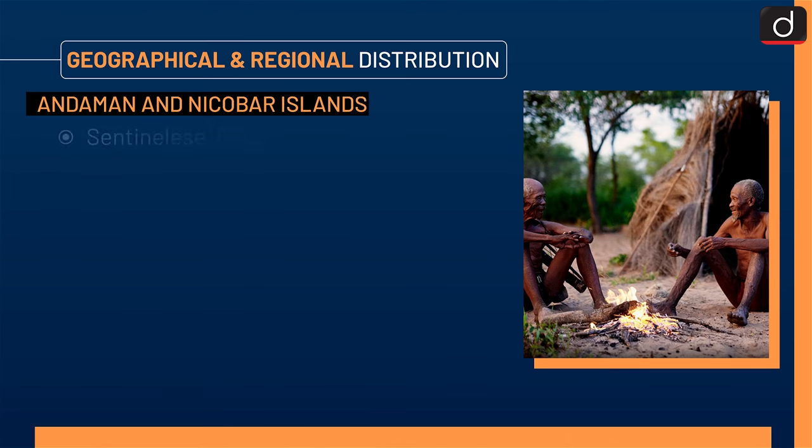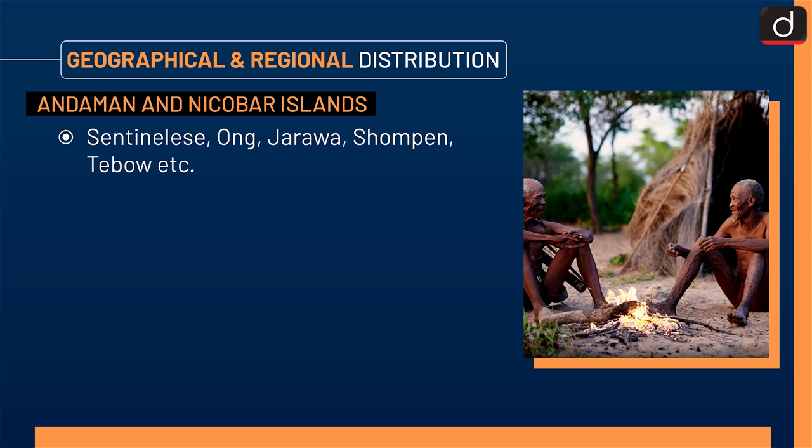Next is Andaman and Nicobar Islands. Major tribes are Sentinelese, Ong, Jarawa, Champagne, Tebow, etc.